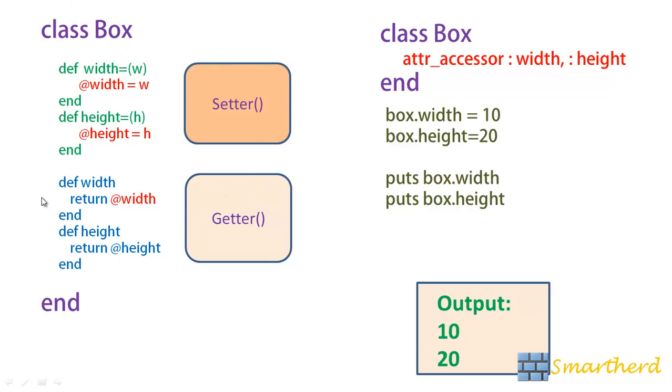Yes guys these whole bunch of codes are confined here within the class box and end which is attr underscore accessor width and height. These two are just creating getters and setters.